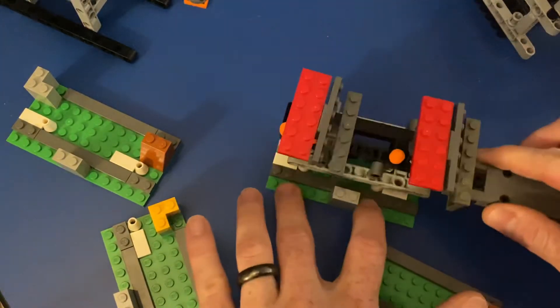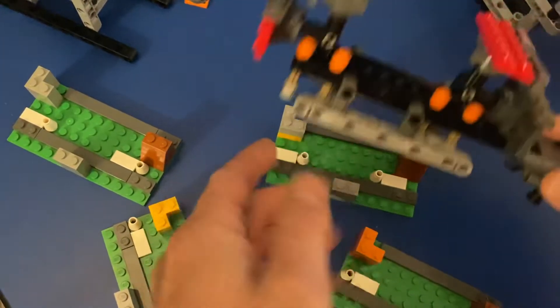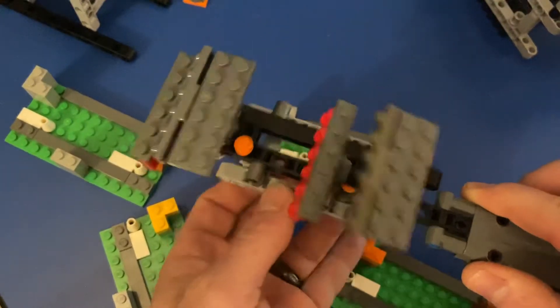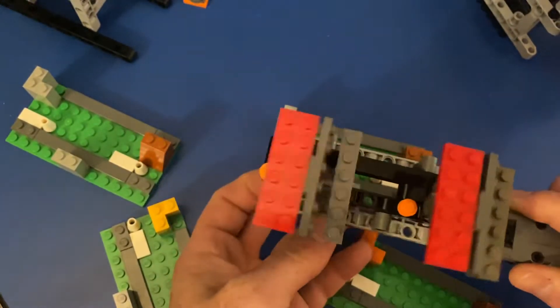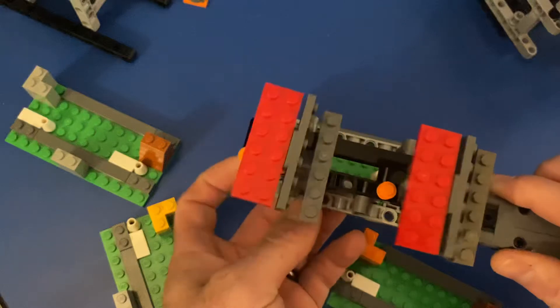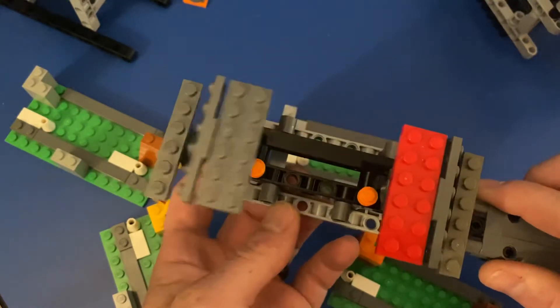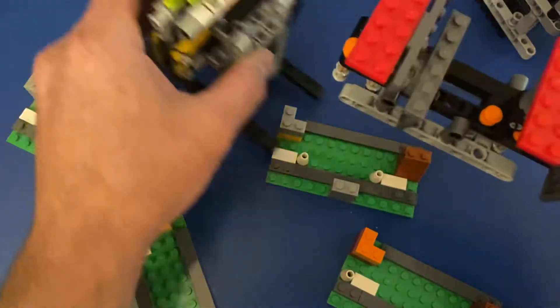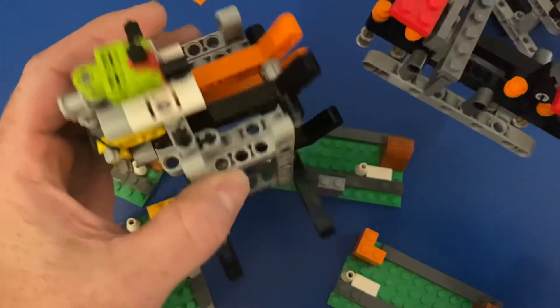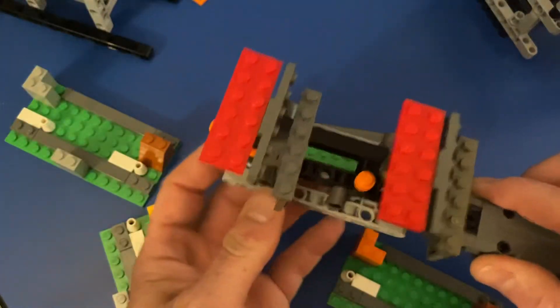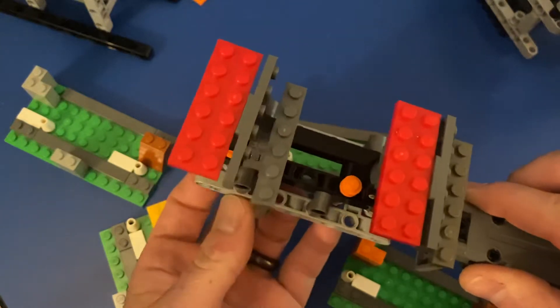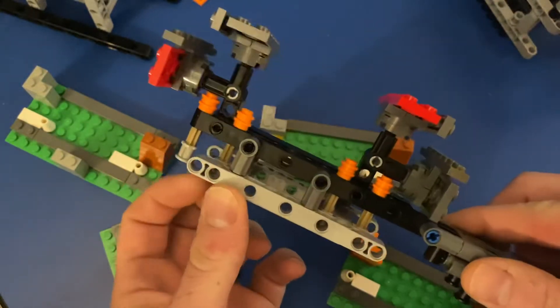So basically these are like punch cards, and I'm setting the bits here. I'm also experimenting here with 2x6 plates because I want to use it for something else. This is more of a bit storage device, and this is more of a bit display device, because there's no latch on it.